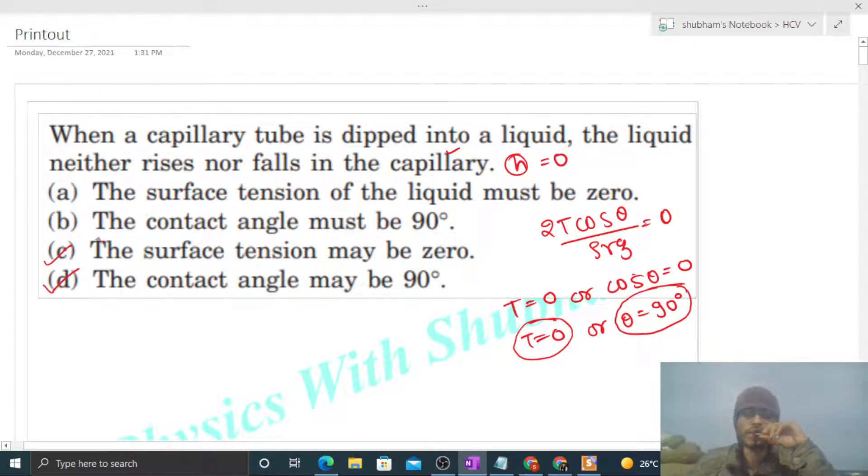May must bhi nahi aega, because either surface tension may be zero or contact angle may be 90 degrees. So that's why may aega, must nahi aega. Option A and B are not correct.